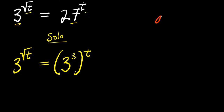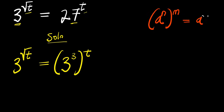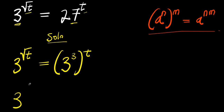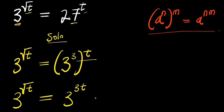So right now, if you have a raised to the power of n, and this is raised to the power of m, this equals a raised to the power of n times m. So we apply that here. We have 3 raised to the power of square root of t equals 3 to the power of 3 times t, that is 3t.